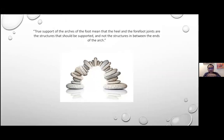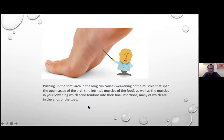True support of the foot's arches means supporting the heel and forefoot joints — the structures at either end — not placing a speed bump in the middle of the insole. Pushing up the foot arch in the long run actually causes weakening of the intrinsic muscles of the foot and the lower leg muscles — including the flexor hallucis and flexor digitorum — that span the ankle and subtalar joint. Arch support in the middle of the foot will, over years, waste these intrinsic muscles and cause the arch to fall even more flat.